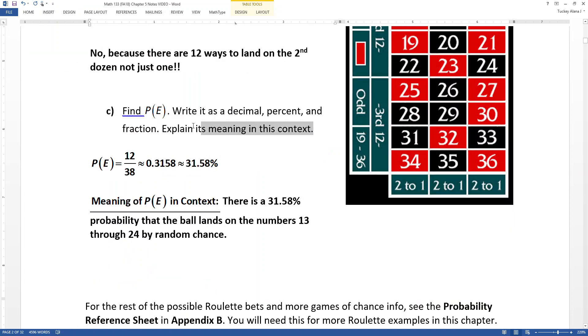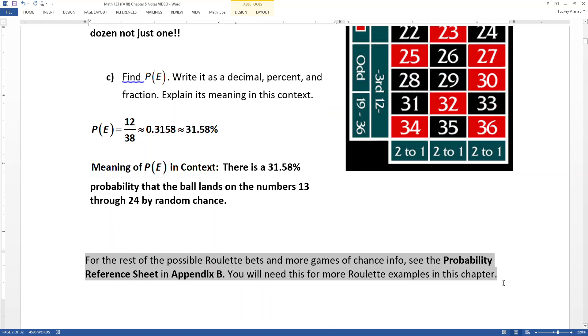I think I'll add to this a little component here that just says explain its meaning in this context. So if you want to explain what P parentheses E means, it's that there's a 31.58% probability that the ball will land on the numbers 13 through 24 by random chance. P stands for probability, E stands for event E. So I'm explaining the probability, and then I'm explaining the event E for my context using my words. And the note down here just reminds us that we have all this in that appendix B. We don't need to memorize any of it. It will all be just given to you for your exams over probability as well as the final exam. So don't worry about memorizing it. Worry about knowing how to use it.